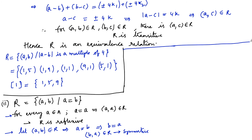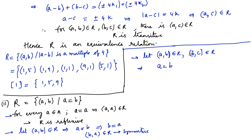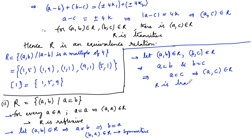For transitivity, let (a, b) ∈ R₂ and (b, c) ∈ R₂. Then a = b and b = c, which implies a = c, so (a, c) ∈ R₂. Hence R₂ is transitive. Therefore R₂ is reflexive, symmetric, and transitive, and R₂ is an equivalence relation.